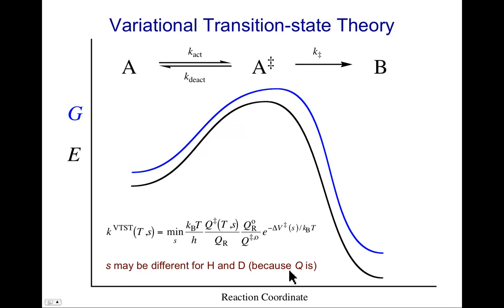And so if this is the activated complex for H, it looks like here. If this is D, it might be here. And again, just using the transition state structure and computing isotope effects for that structure comparing this to this may not be as good as comparing this to this. So using the variational approach, one can often do better on isotope effect calculations, as well as rate constant calculations.